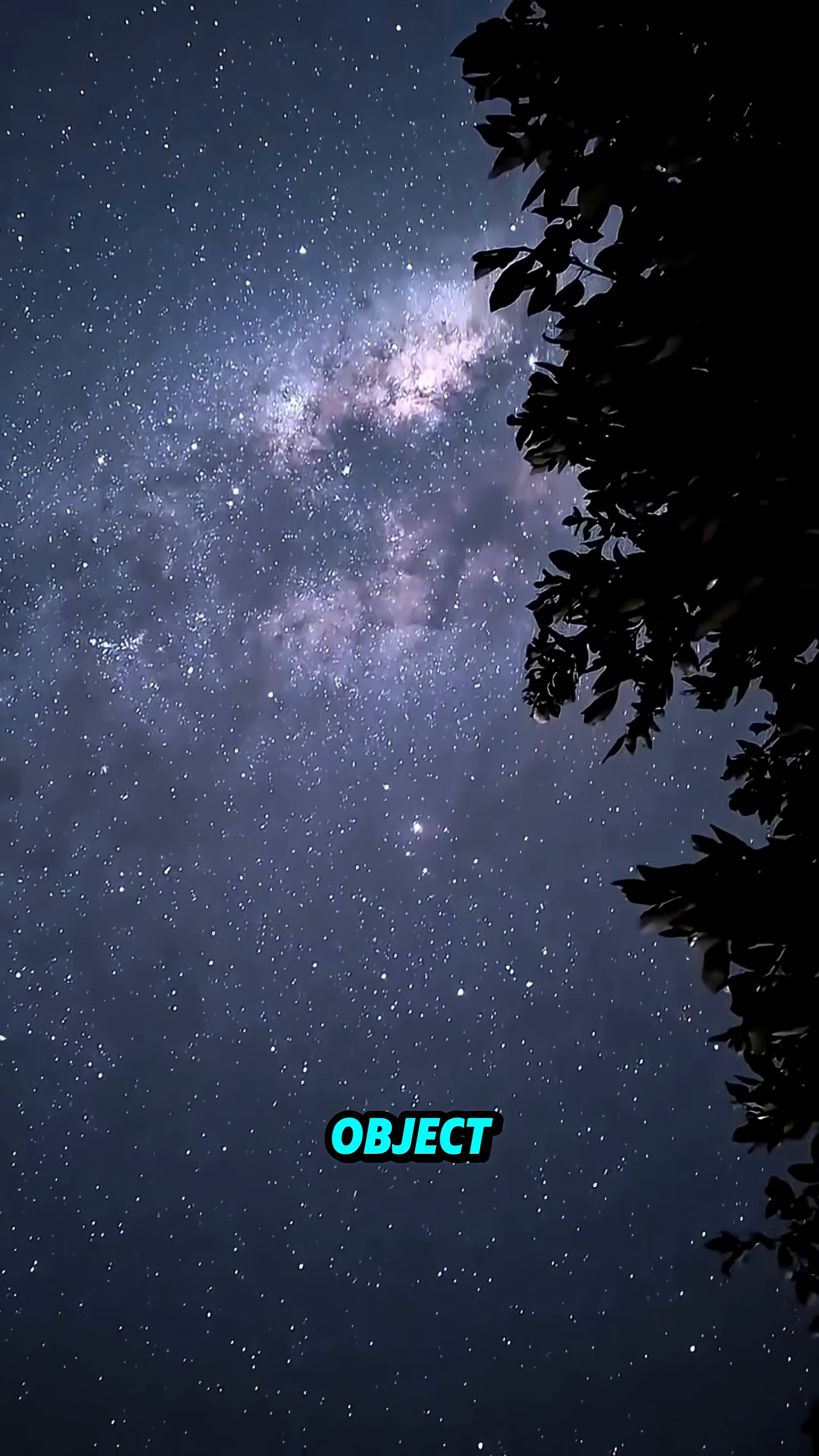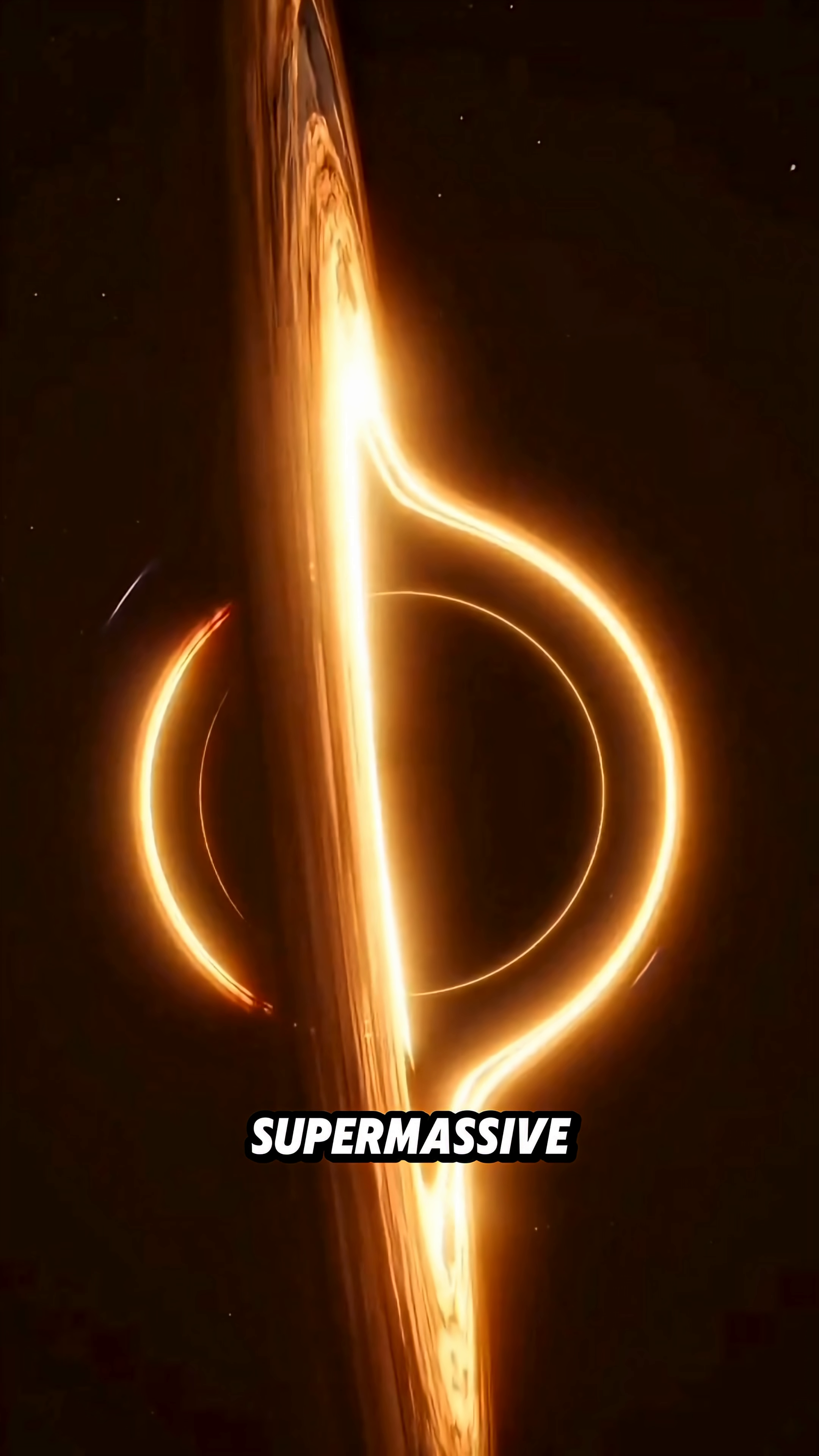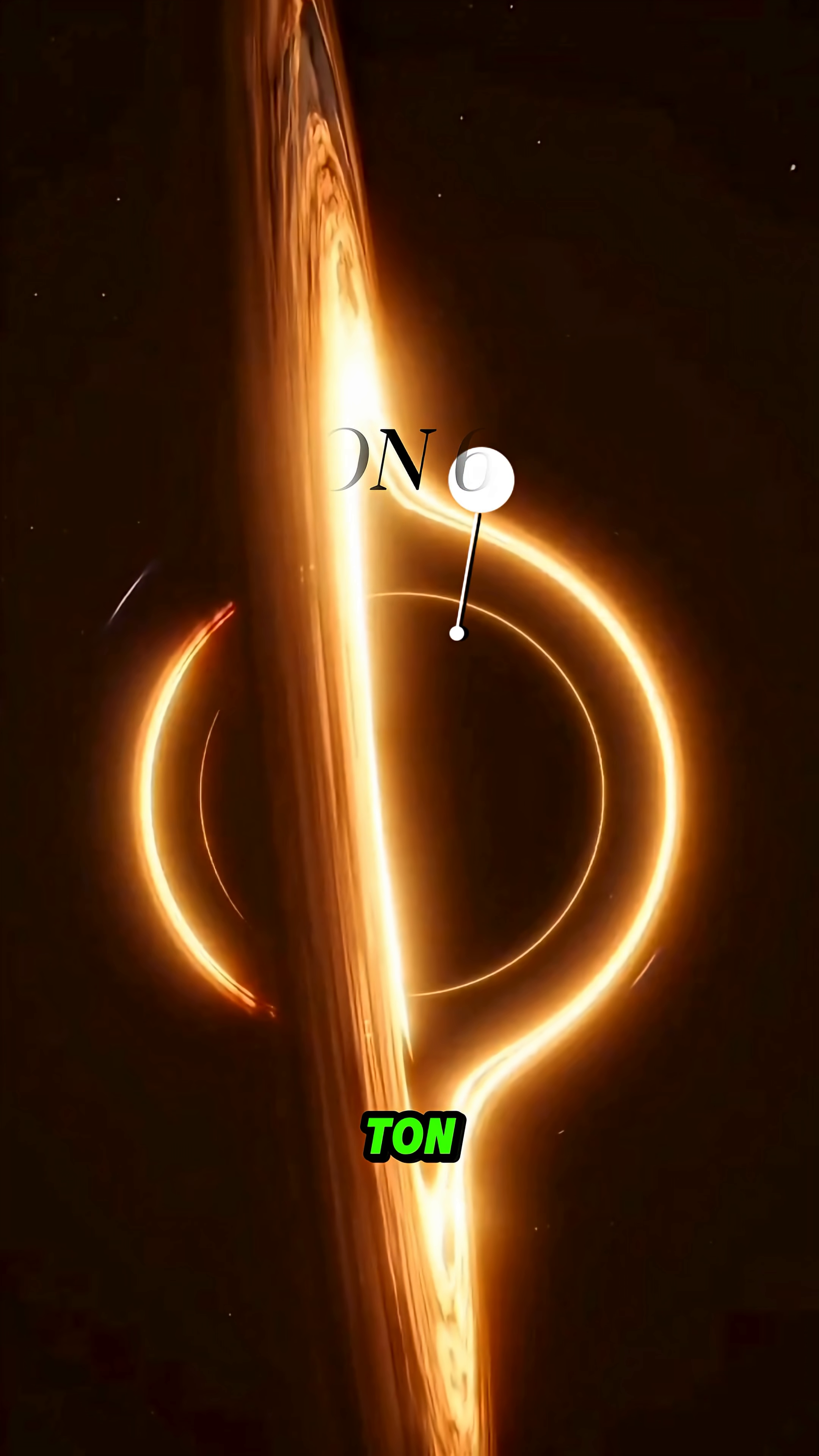Have you ever wondered what the most powerful object in the observable universe is? It's not a star, not a galaxy. It's something far more massive. It's a supermassive black hole known as Ton 618.